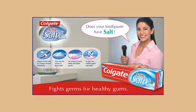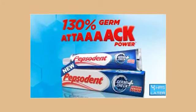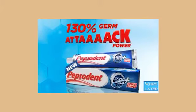Looking at this advertisement, the Colgate ad distinguishes by asking 'does your toothpaste have salt?' — the salt feature is the benefit it provides and also distinguishes it from other brands. Next is Pepsodent, saying it has 130% germ attack power — when you buy Pepsodent, you are assured it will protect your teeth with 130% germ attack power. These advertisements create awareness and persuade consumers to buy the product.